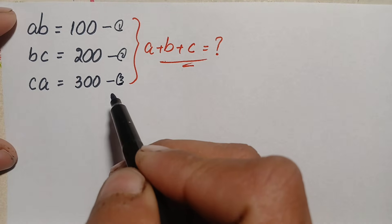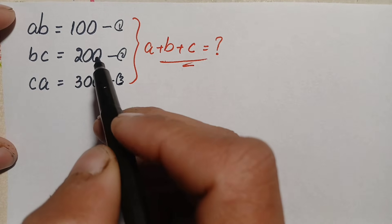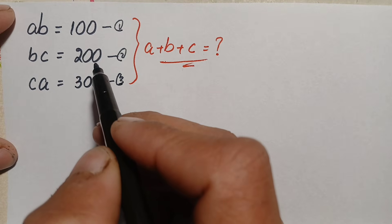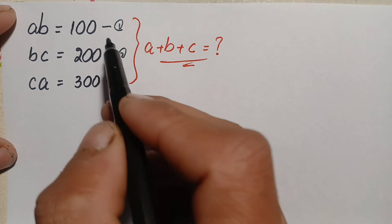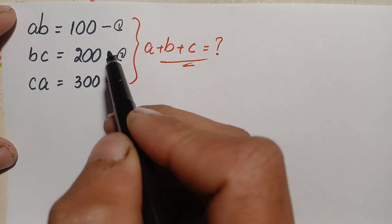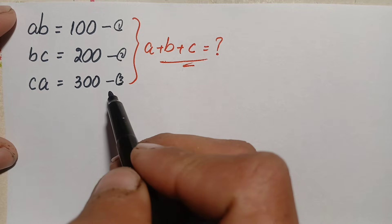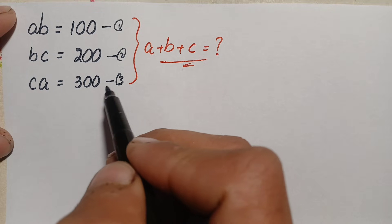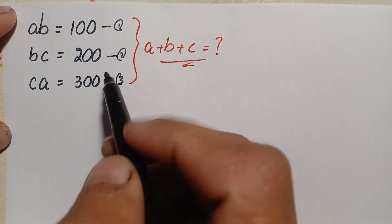In the first step, we will multiply equation number one and equation number two, and divide the result by equation number three.